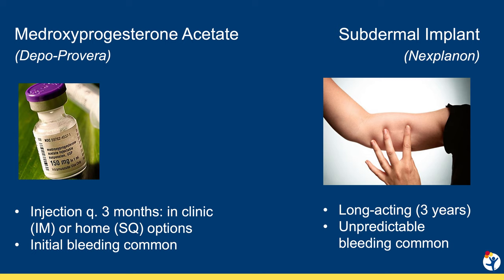With Depo, about 50% of users will have bleeding initially, but by six to nine months, most will be amenorrheic. The implant is an excellent option for long-acting contraception. However, only about 20% of users will remain amenorrheic. Patients who choose the implant need to be aware that unpredictable bleeding is likely. That said, the progestin in the implant causes endometrial atrophy, and so most patients will have less blood loss and fewer days of bleeding overall.